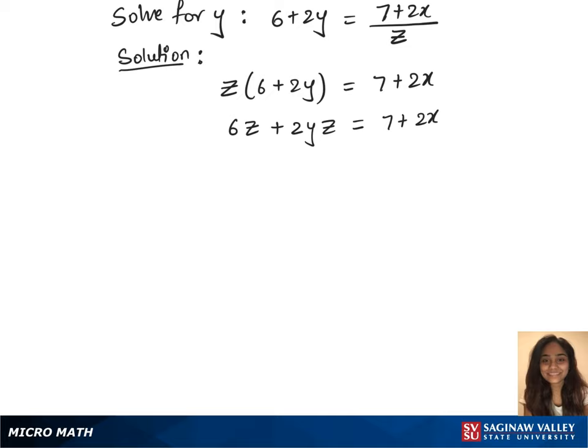In our next step, we will subtract 6z on both sides, which gives us 2yz on the left equals 7 plus 2x minus 6z on the right.